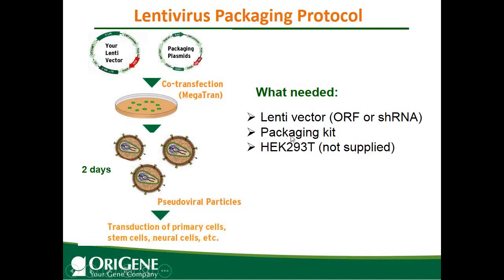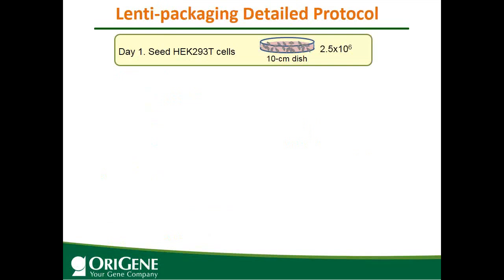For a quick summary of what you need: you need the lentiviral vector — either lentiviral ORF or shRNA — and the lentiviral packaging kit. OriGene's packaging kit contains the transfection reagent. If the packaging kit you have doesn't include it, you also need a transfection reagent. HEK293 cells are not supplied.